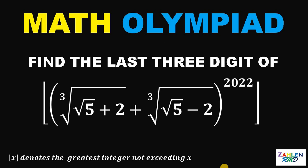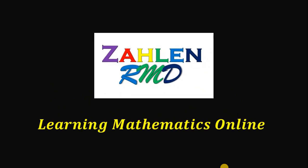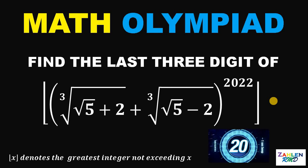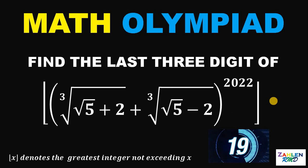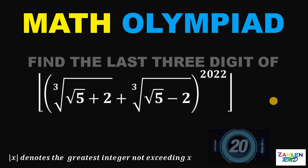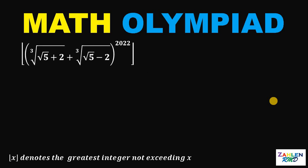Good day, everyone. Here's our math challenge for today. Find the last three digits of the floor value of the cube root of (√5 + 2) plus the cube root of (√5 − 2), all raised to 2022. If you want to try this problem, let's pause this video — we have 20 seconds, and the timer starts now. Time's up. Let's answer this question together. This question comes from the Hong Kong International Mathematical Olympiad Heat Round of 2022.